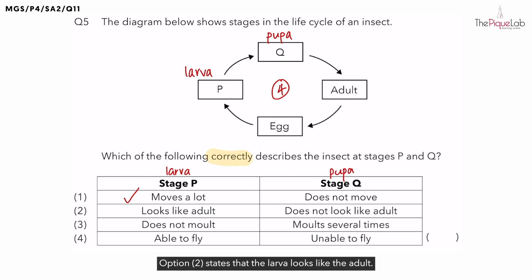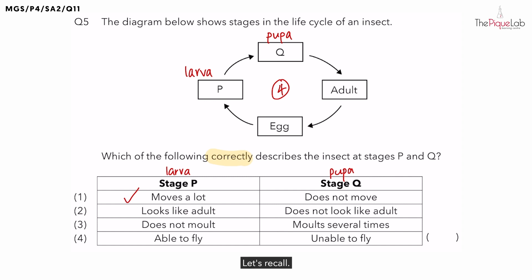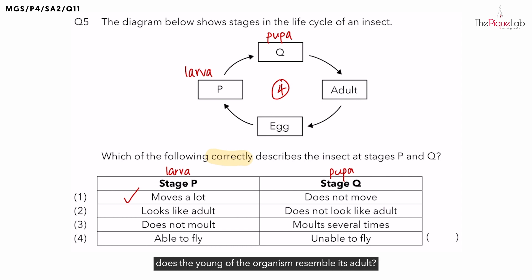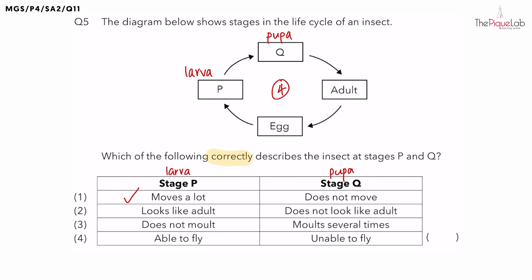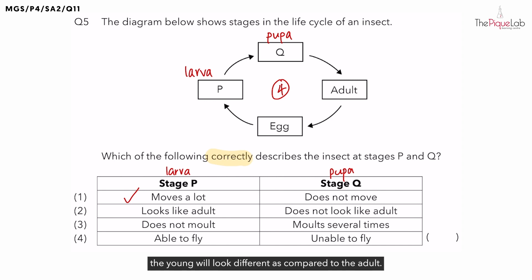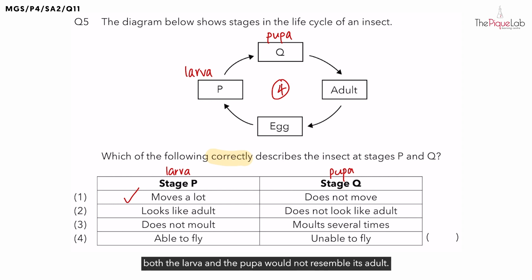Option 2 states that the larva looks like the adult. For organisms with a 4-stage life cycle, does the young of the organism resemble its adult? No. This is because the larva changes its look in the pupa stage — the pupa is like a changing room, so the young will look different compared to the adult. Hence, for organisms with a 4-stage life cycle, both the larva and the pupa do not resemble the adult. Option 2 is incorrect.